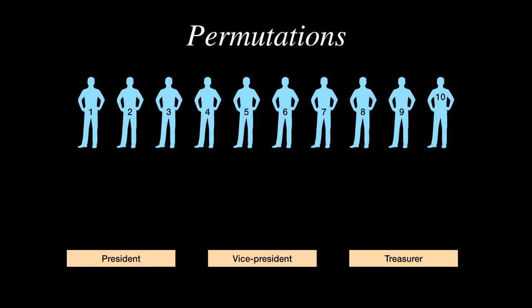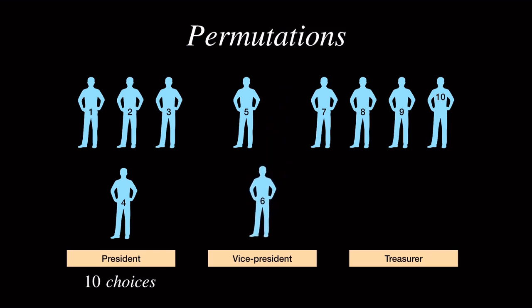We see that there are 10 choices for the president. For example, we might choose person 4. But after we choose the president, there will only be 9 people left to choose from for the vice president. So, for example, we might choose person 6. And after we chose the vice president, we will now have 8 people left to choose from for the treasurer.